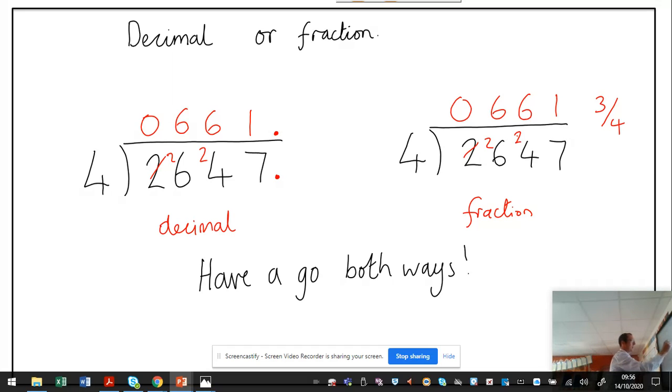And in this column is nothing. There is a 0, so I'm going to put the 0, and I'm going to carry my 3 over to there. So 4 into 30 goes 7 with 2 left over. Now, I've got nothing here, so I've got another 0. 4 into 20 goes 5. I now have a decimal answer of 661.75 and 661 and 3 quarters.